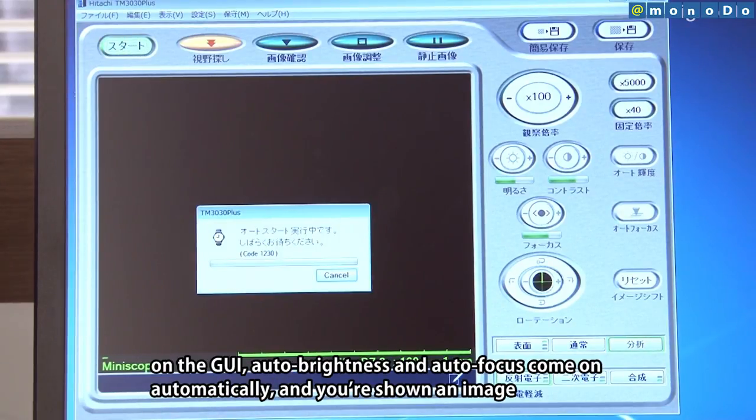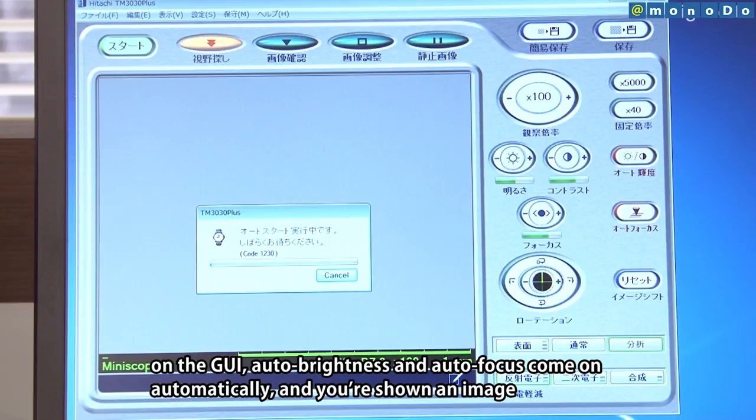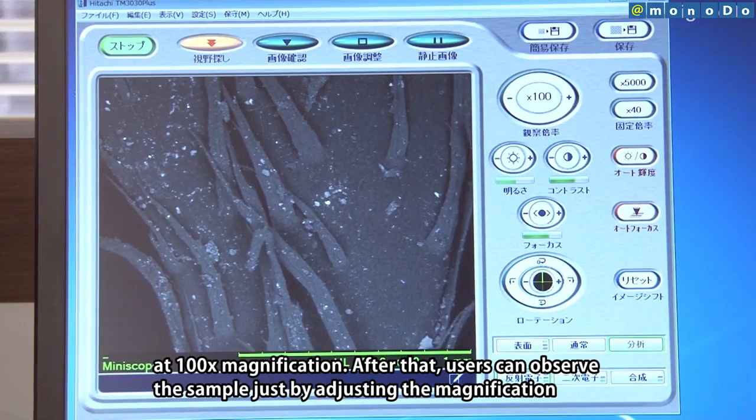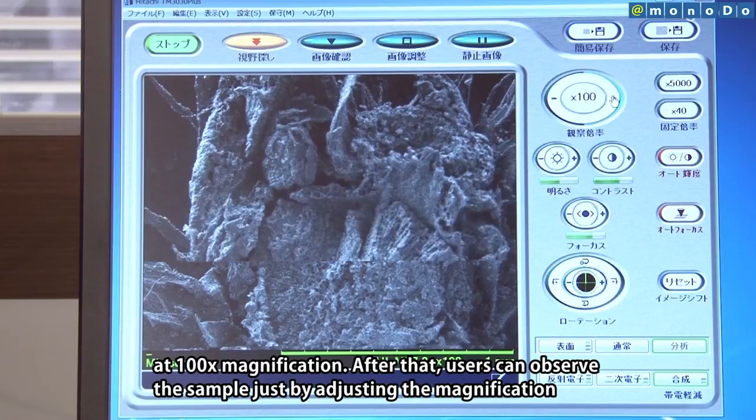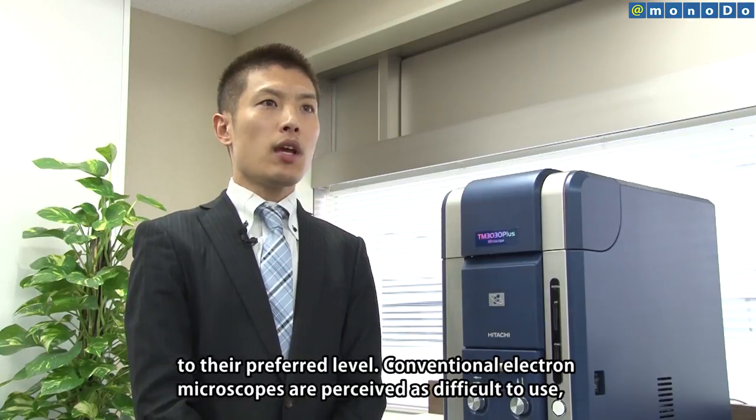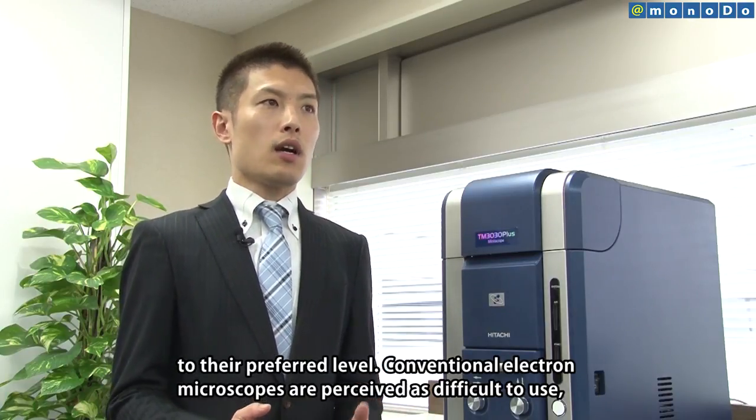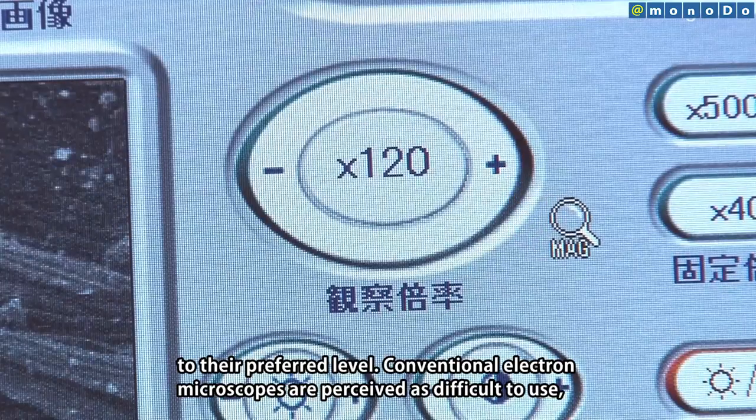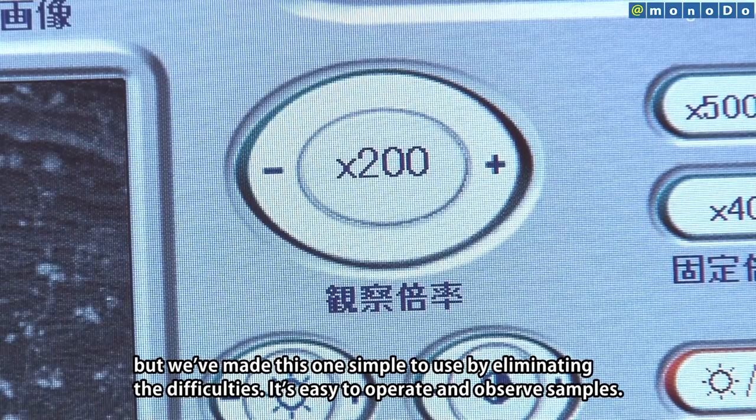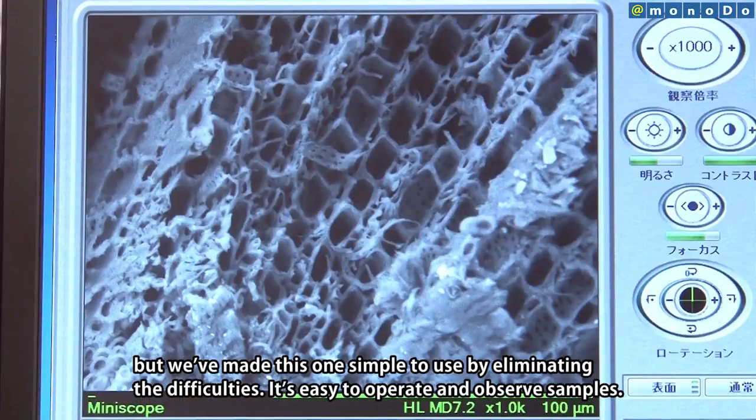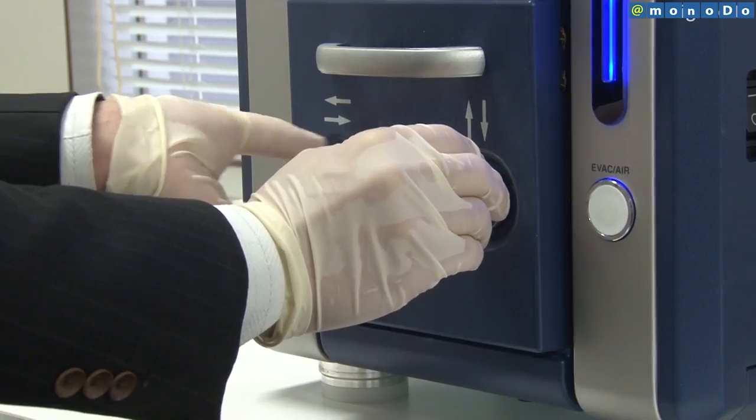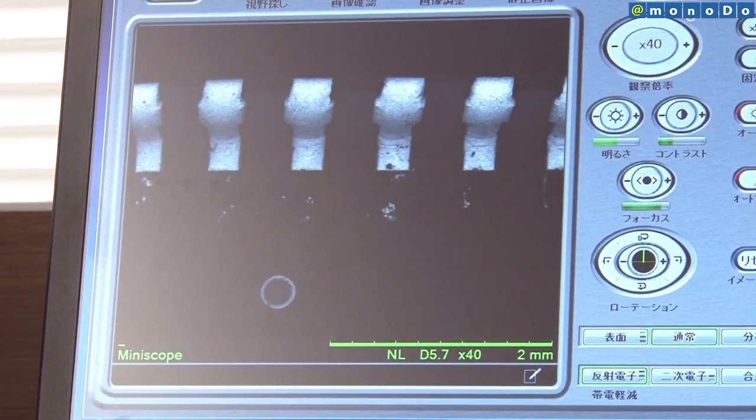The TM3030+ features comprehensive auto functions. By clicking the start button on the GUI, the auto-focus function works automatically and displays an image at 100x magnification. Users can then simply adjust the magnification to their desired level for observation. Unlike conventional electron microscopes which were considered difficult to use, this microscope eliminates those difficulties and makes operation and observation much simpler.